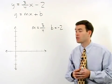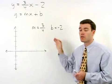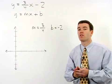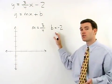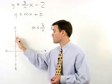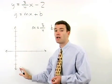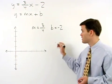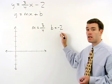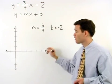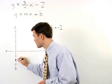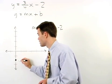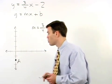To graph a line using its slope and y-intercept, we always start with its y-intercept. Remember, the y-intercept of a line is the point where the line crosses the y-axis. Since our y-intercept is negative 2, we start by plotting the point that is down 2 units on the y-axis, and we call that point A.